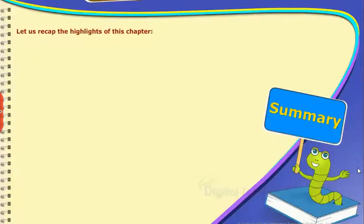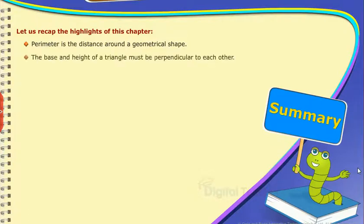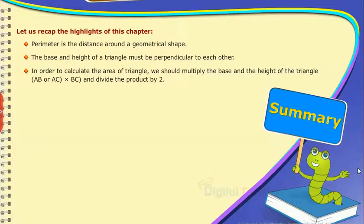Summary: Let us recap the highlights of this chapter. Perimeter is the distance around a geometrical shape. The base and height of a triangle must be perpendicular to each other.